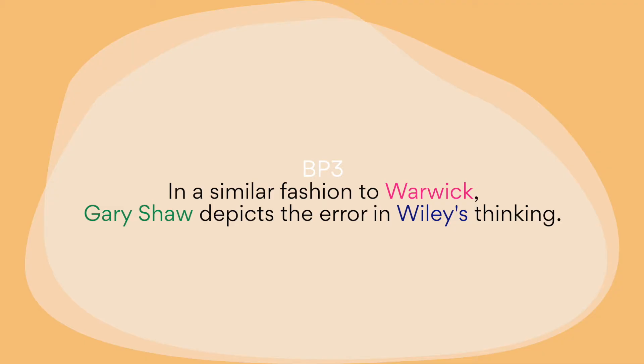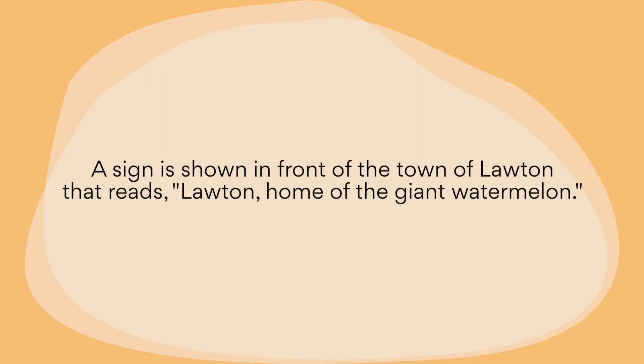Now let's look at her body paragraph three. It starts with 'in a similar fashion to Warwick, Gary Short depicts the error in Wiley's thinking.' This is really nice because it's short, but it compares all three of them and discusses how Short is similar to Warwick but different to Wiley. I like the fact that this paragraph actually doesn't make as many comparison points as the one before — that's really to show you how it's still okay to just have some comparison points. The next sentence reads: 'A sign is shown in front of the town of Lawton that reads, Lawton, home of the giant watermelon.' And of course that's very individual and specific to article three — I'll just call it article three, even though it's a cartoon.